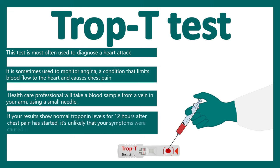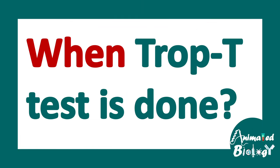In your sample, after 12 hours of severe chest pain, if you don't have TROP-T then you are okay. But if TROP-T is detected in the blood, that means you had a heart attack during the last chest pain. So overall, TROP-T gives us an idea about whether a heart attack has taken place or not.